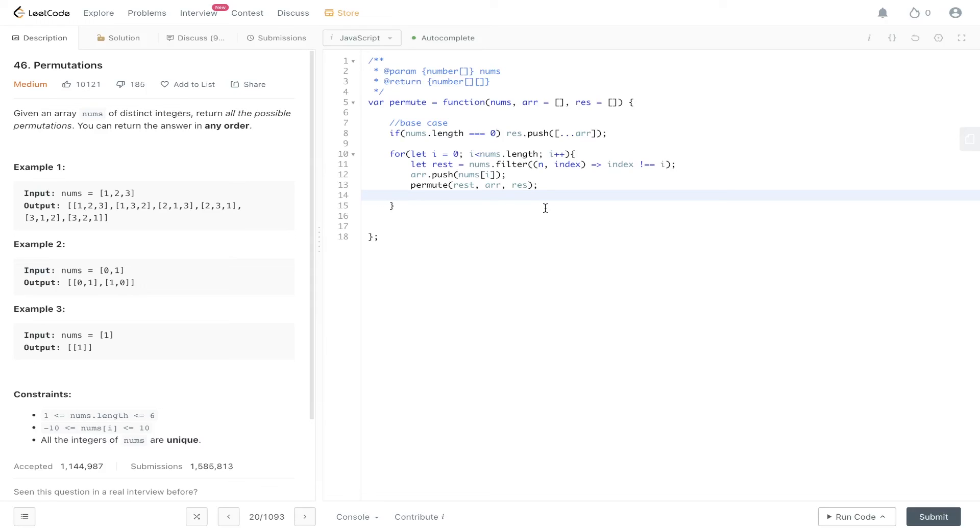And then this will carry out the recursive call until nums is empty. And then what we need to do to backtrack to find all the other possible permutations is just pop off of the array. And finally, once all permutations have been found, we can return res. Let's give that a go.